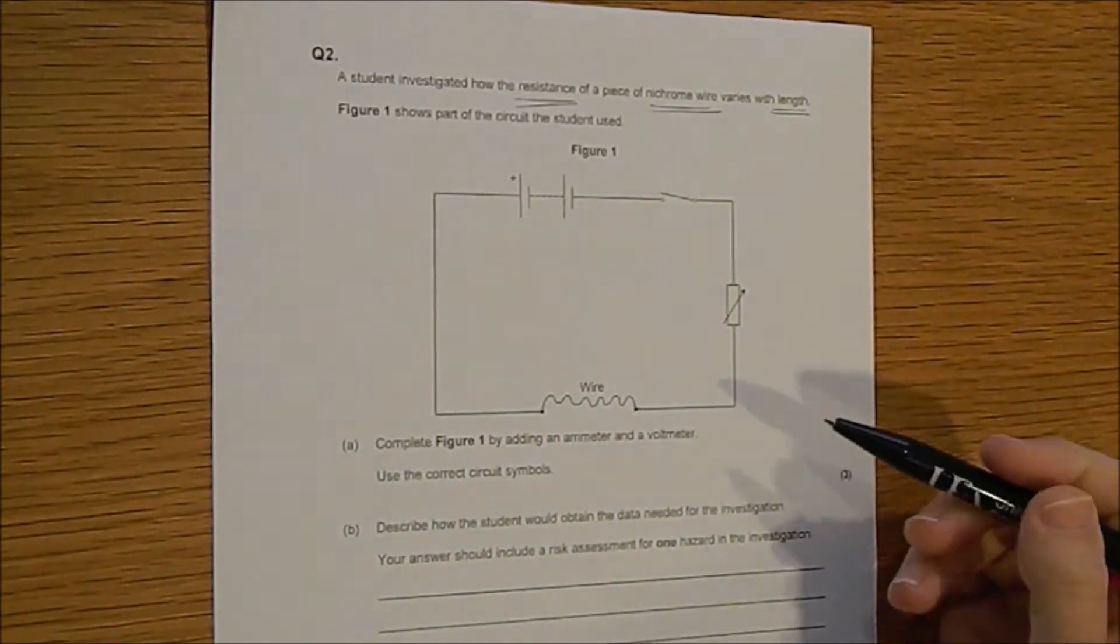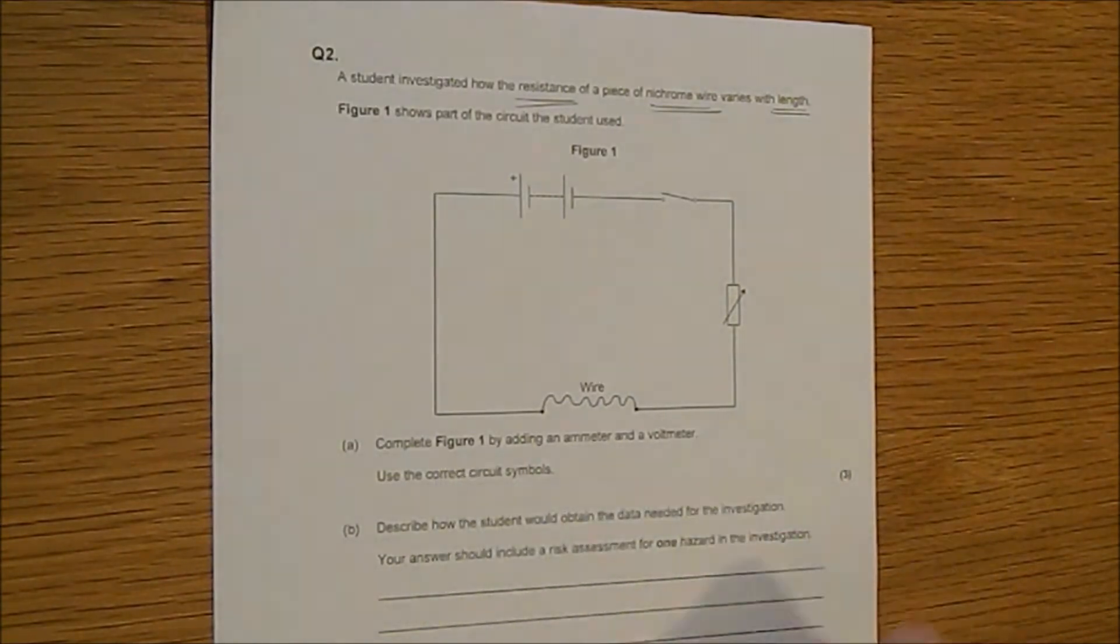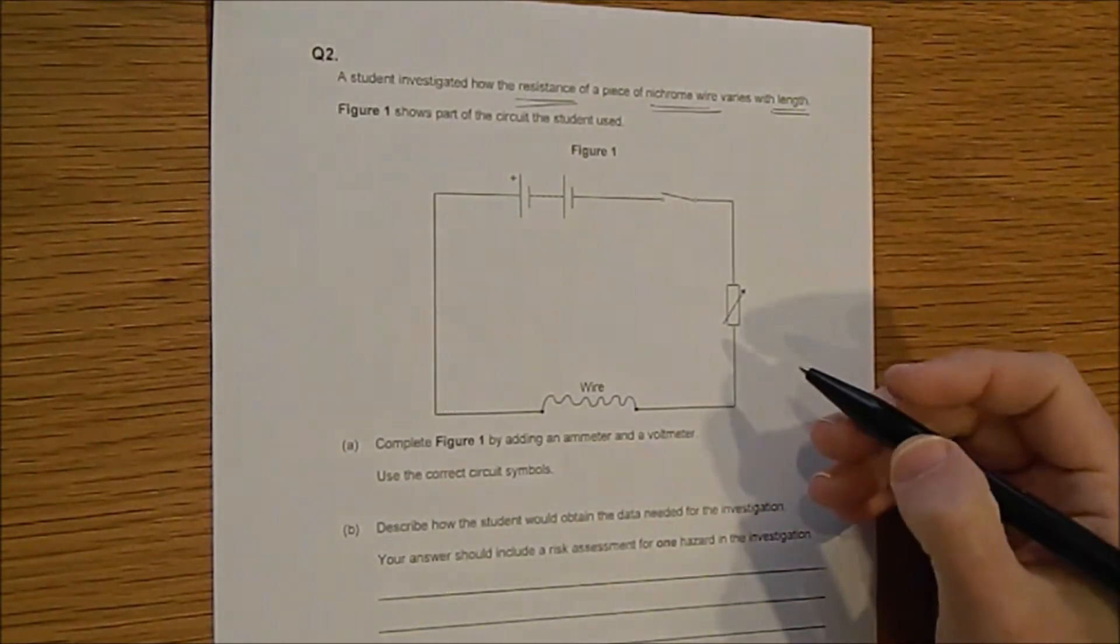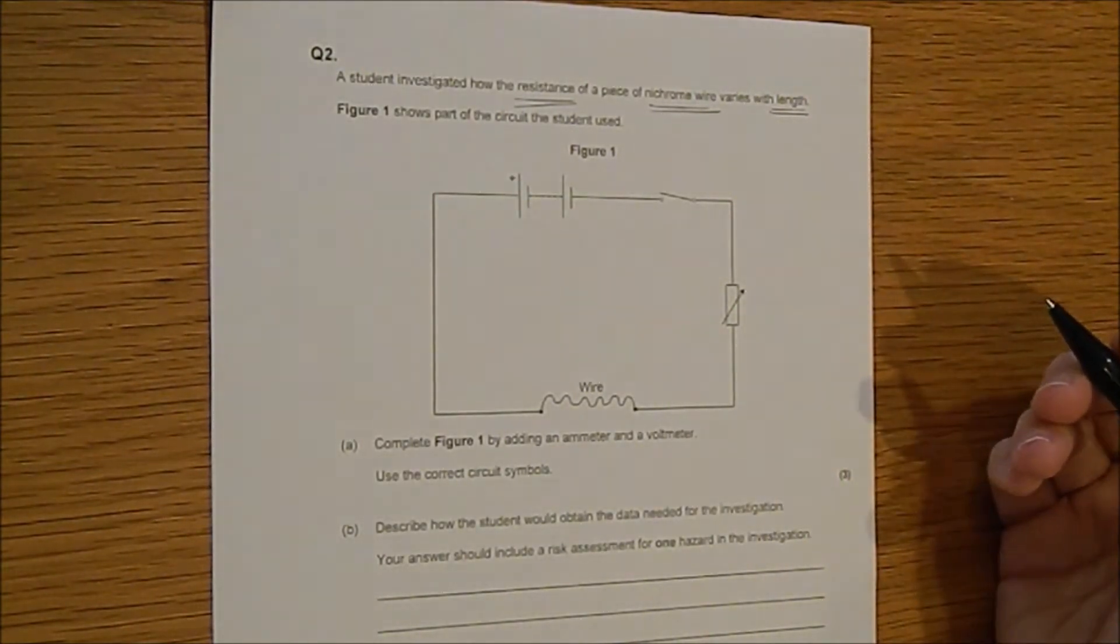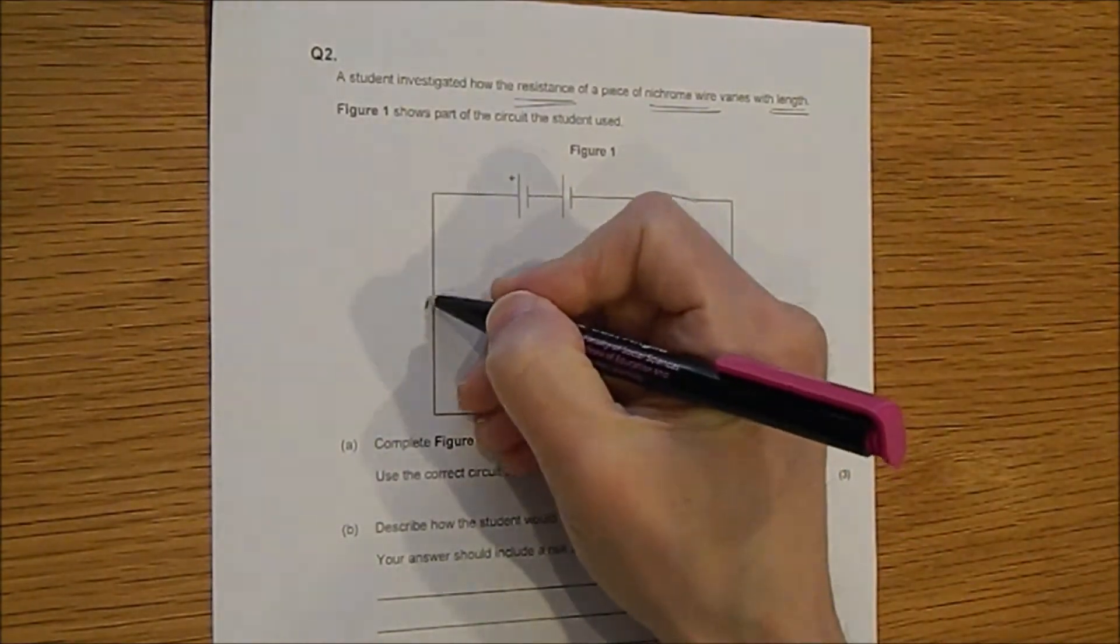We'll just start this off by completing question 2a before we get into the 6 marker here. Complete figure 1 by adding an ammeter and a voltmeter. So an ammeter must go in series and it really doesn't matter where in the circuit you place this so let's place it just here.